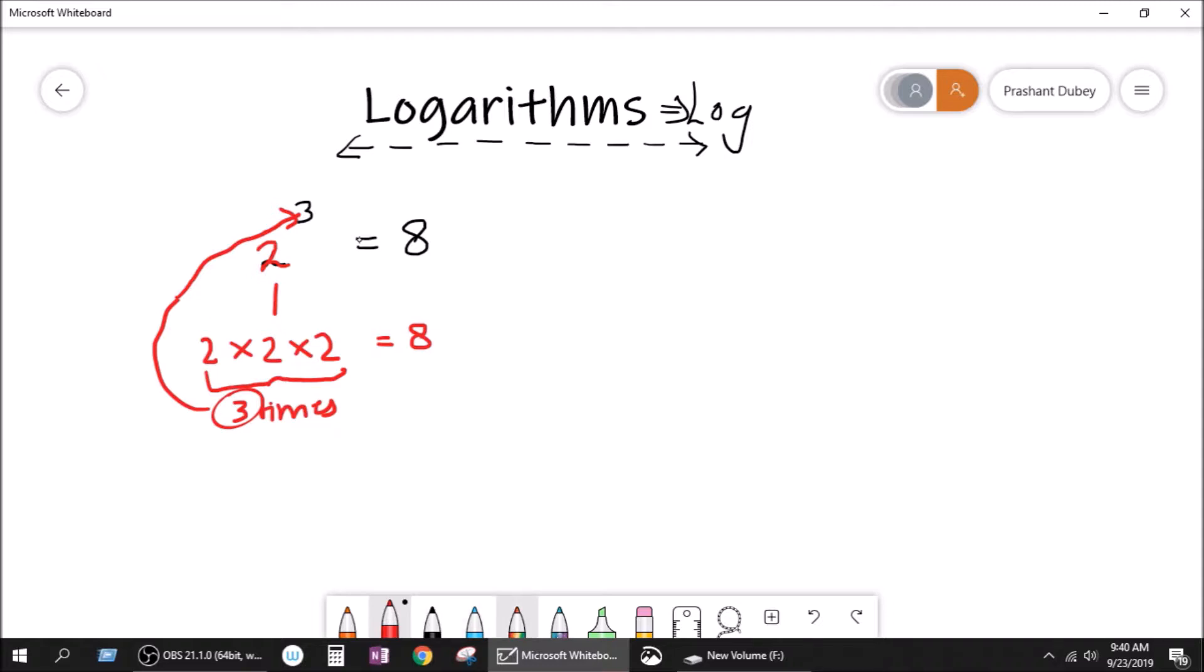Let me write this one more time. 2 to the power 3 is equal to 8. Now, if you want to understand logs, you have to analyze this thing very carefully. What is 2? 2 is the base. What is this 3? This 3 is the power, or we also call it index or exponent. What is 8? 8 is your output, or you can also say your answer.